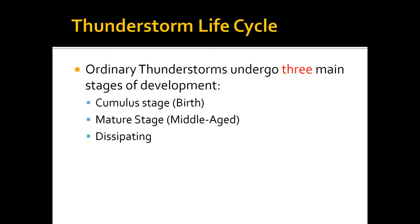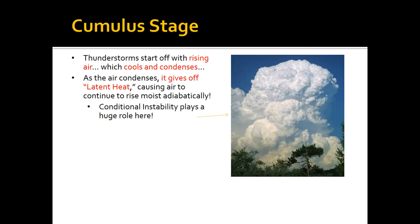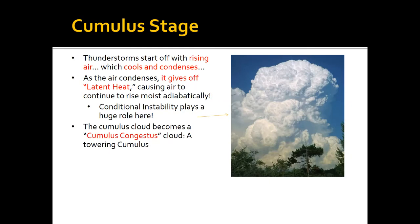The three stages are: cumulus stage, which is the birth of the thunderstorm; mature stage, which is the middle age; and dissipating stage, which is the death. The cumulus stage starts with warm, moist air that is allowed to rise. As it rises, it cools and condenses. Recall latent heat — condensation actually warms the atmosphere, making it easier for this air to continue to rise. As it continues to rise, the cloud becomes taller and taller, eventually becoming what we call a cumulus congestus cloud.